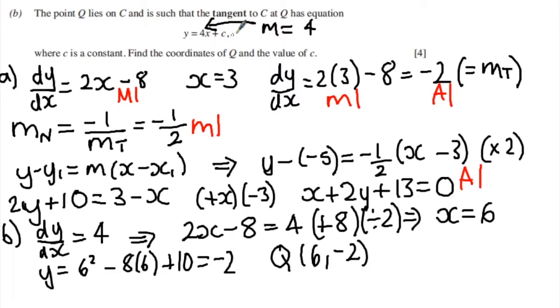Finally, I want to find the value of c, so I can find the value of c by substituting my x and y value into this equation. So we're going to get minus 2 equals 4 lots of 6 plus c. If I subtract 4 times 6, which is 24, if I subtract that from both sides, I get that c is equal to minus 26.